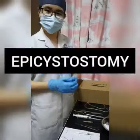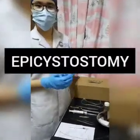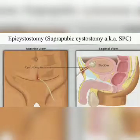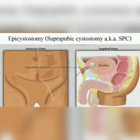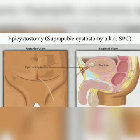Today we'll be talking about epicystostomy, which is also named as suprapubic cystostomy, known as SPC. Epicystostomy is a surgically created connection between the urinary bladder and the skin, which is used to drain urine from the bladder in patients with obstruction of normal urinary flow.